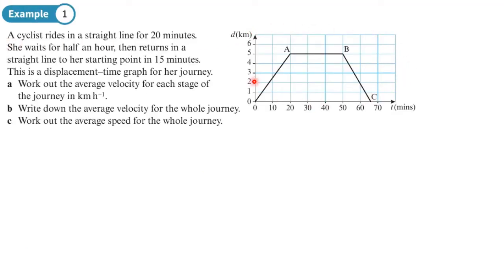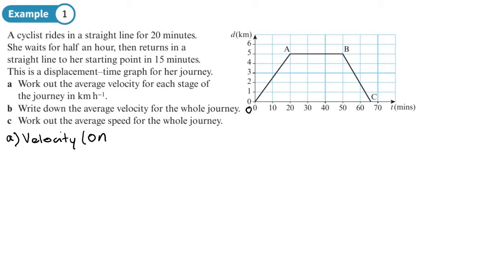Here's a displacement-time graph example: a cyclist rides in a straight line for 20 minutes, waits for half an hour, then returns in a straight line to her starting point in 15 minutes. This is a displacement-time graph for her journey. Part A asks us to work out the average velocity for each stage of the journey in kilometers per hour. We'll call the origin O and work out velocity from O to A.